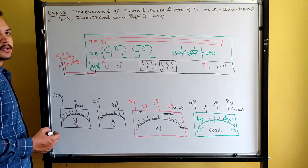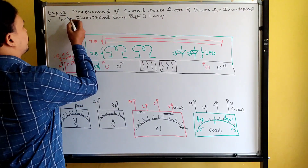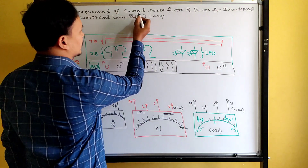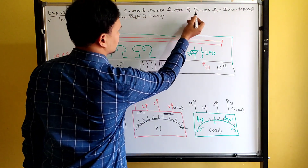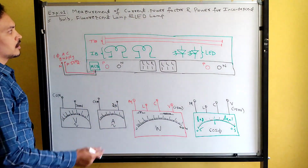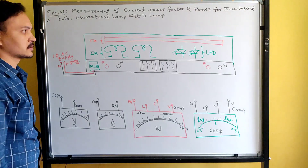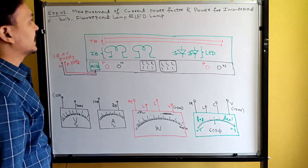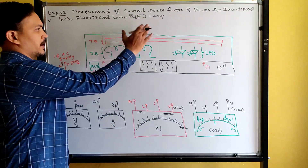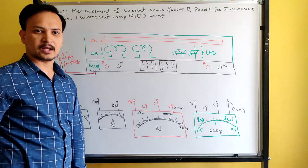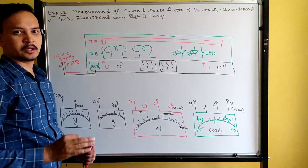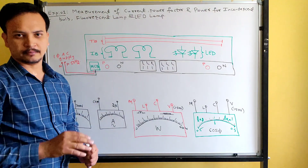The first experiment is measurement of current, power factor, and power for different types of load bands — that is incandescent lamp, fluorescent lamp, and LED lamps. This is the university experiment title.